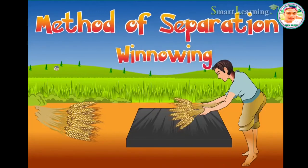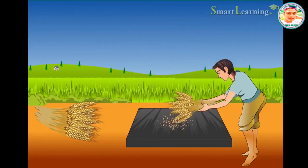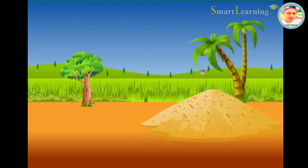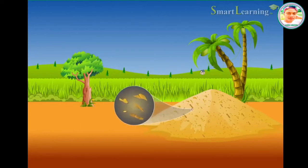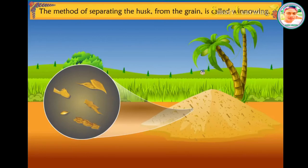Method of separation. Winnowing. As you have learnt earlier, grains are separated from the stalks by the process of threshing. However, even though the grains are separated from the stalks, they still have dried husk on them. This husk needs to be separated before the grain can be used. The method of separating the husk from the grain is called winnowing.